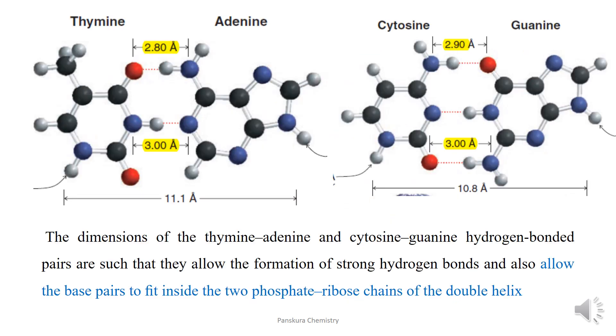The dimensions of the thymine-adenine and cytosine-guanine hydrogen-bonded pairs are such that they allow the formation of strong hydrogen bonds. The distances are 2.9 angstroms and 3.0 angstroms, allowing the base pairs to fit inside the two phosphate-ribose chains of the double helix.